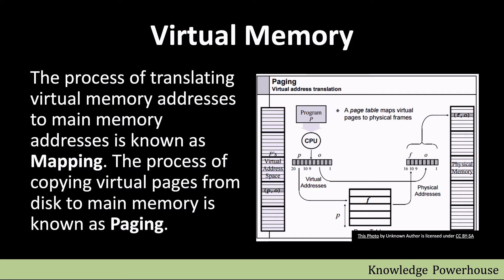When someone accesses data, they specify a virtual memory address. From that virtual address, we find the corresponding main memory address through mapping. The process of copying virtual pages from the hard drive to main memory — from hard drive to RAM — is known as paging. Paging is a costly operation because it involves reading from the hard drive.